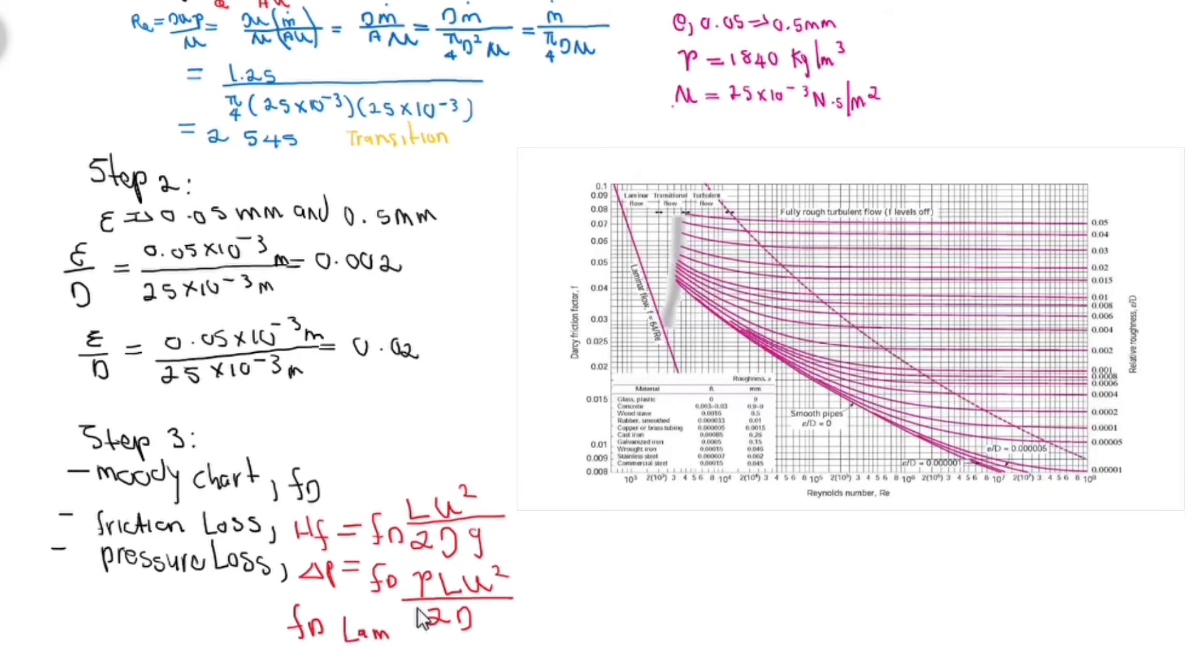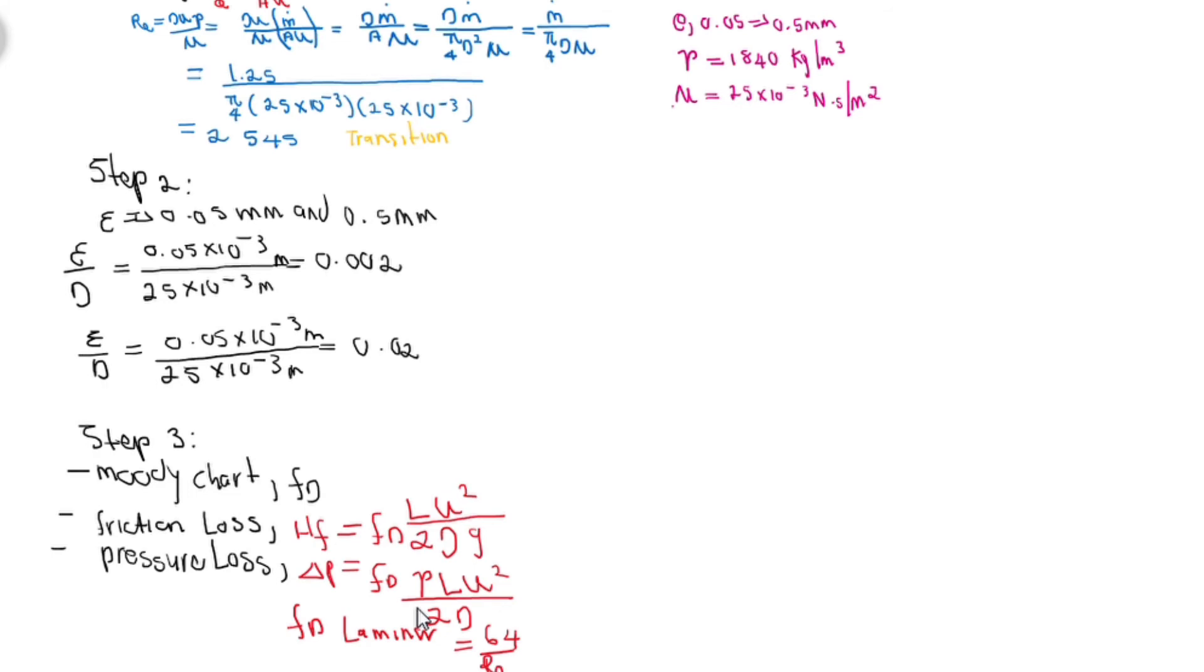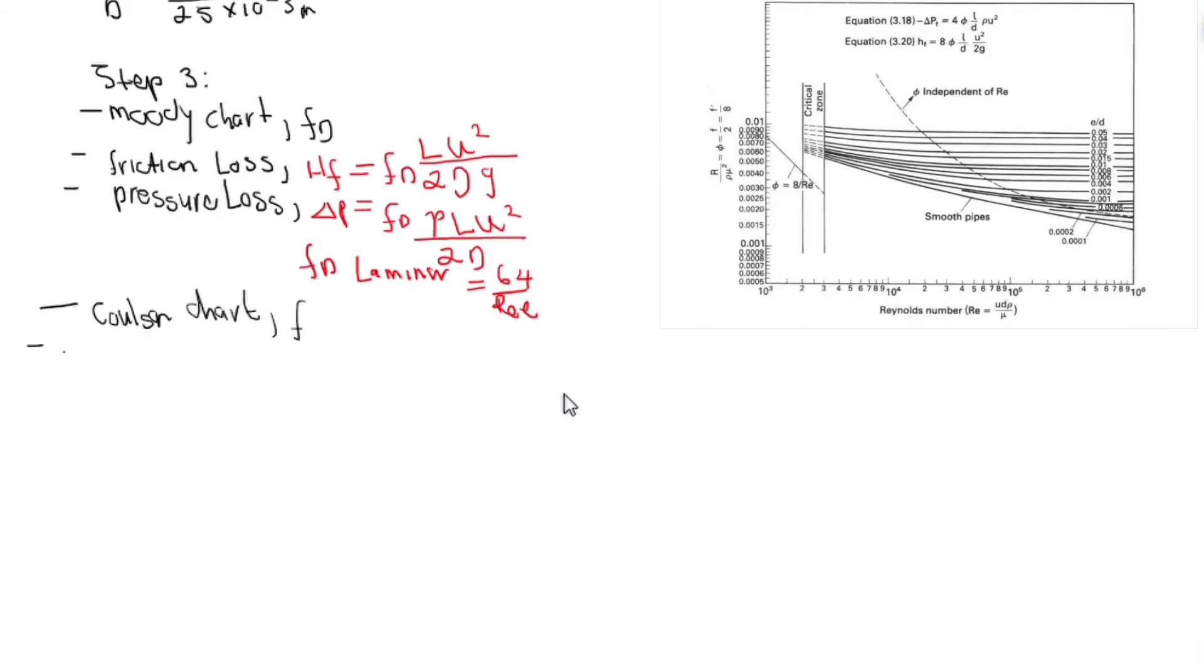We also have the Carlson chart. Friction loss is expressed using 8 times the factor, times length over diameter, times velocity squared, and 2 times gravitational force. So 8 divided by 2 is 4. Pressure loss could be expressed as negative. Pressure loss due to friction: 4 times the factor, times length over diameter, times density, times velocity squared.